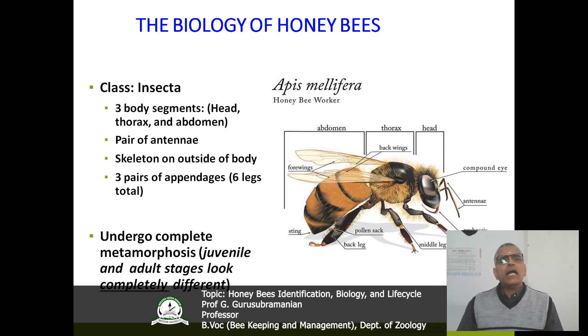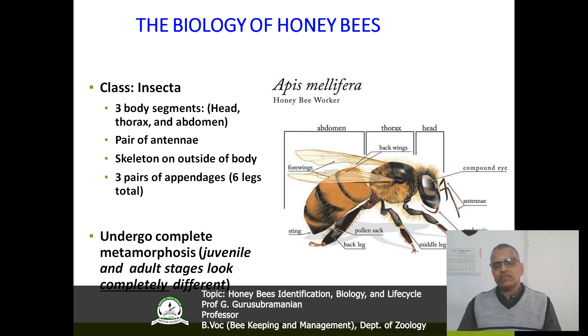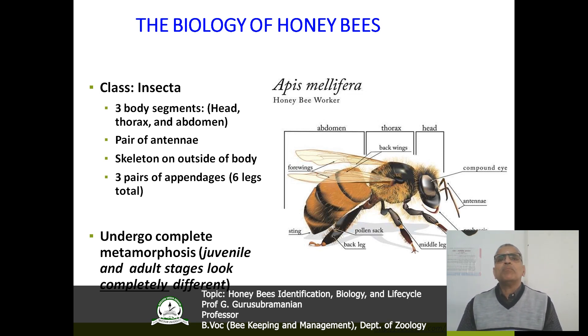These insects undergo complete metamorphosis. Complete metamorphosis means egg, larva, pupa and adult — there are four stages.